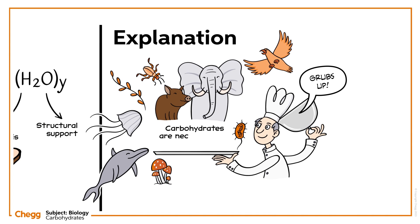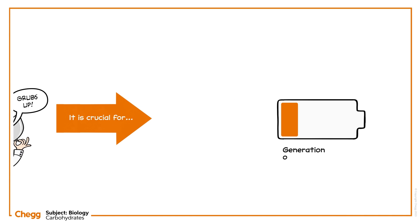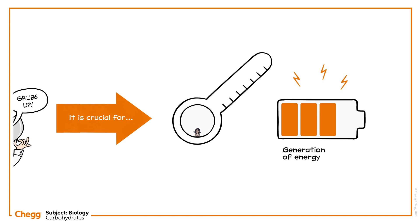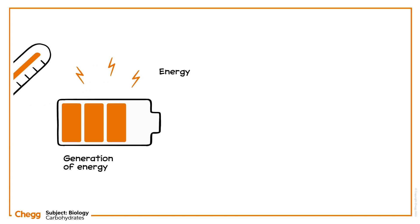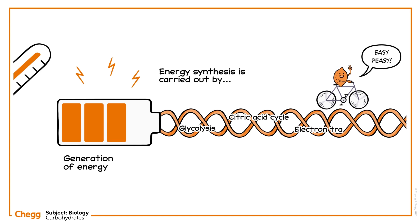Carbohydrates are necessary for all biological life forms. They are crucial for the generation of energy and the execution of various processes to sustain the homeostasis of the body. The energy synthesis from carbohydrates is carried out with the help of a few processes, such as glycolysis, the citric acid cycle, and electron transport.